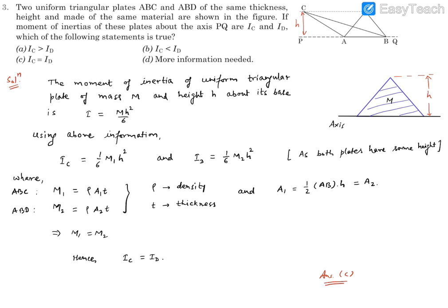Now we need to compare M1 and M2. M1 is the mass of ABC plate and M2 is the mass of ABD plate. Mass of a triangular plate is written as density into volume. Volume can be written as area into thickness T. It says the same thickness.